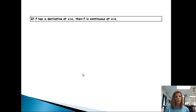All right, next property. If f of x has a derivative at x equals c, then f is continuous at x equals c. So this is just saying, if I have a derivative, I found an answer, then it must be true that f is continuous.